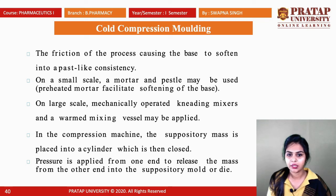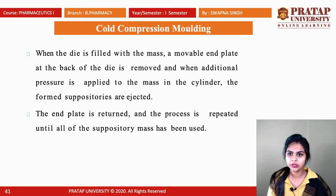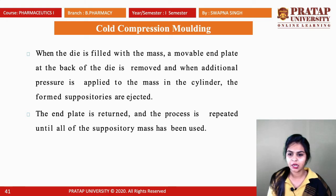On a larger scale, mechanically operated kneading mixers and warm mixing vessels may be applied. In the compression machine, the suppository base is placed into a cylinder which is then closed; pressure is applied from one end, releasing the mass into the suppository mold die. Once the die is filled, the movable end plate is removed and additional pressure ejects the formed suppositories. The end plate is returned and the process is repeated until all suppository mass has been used.